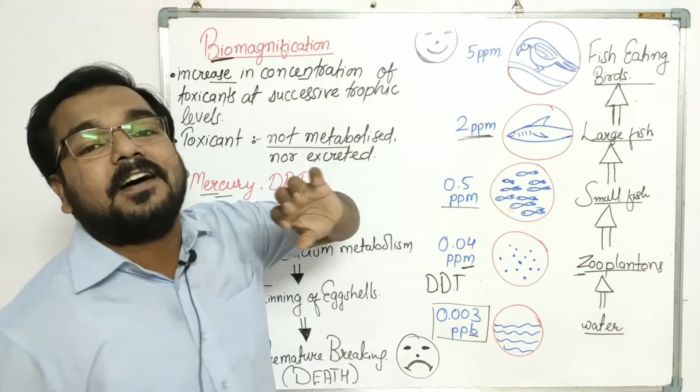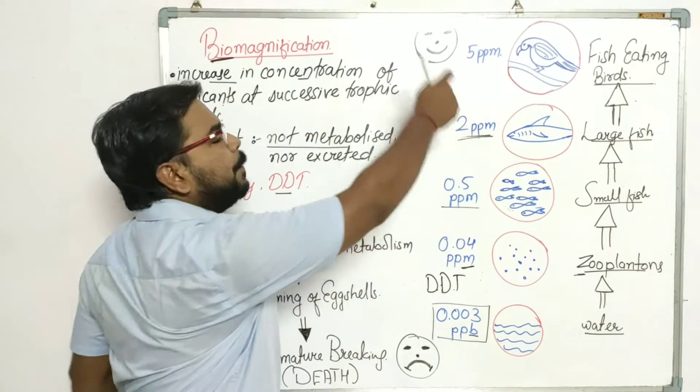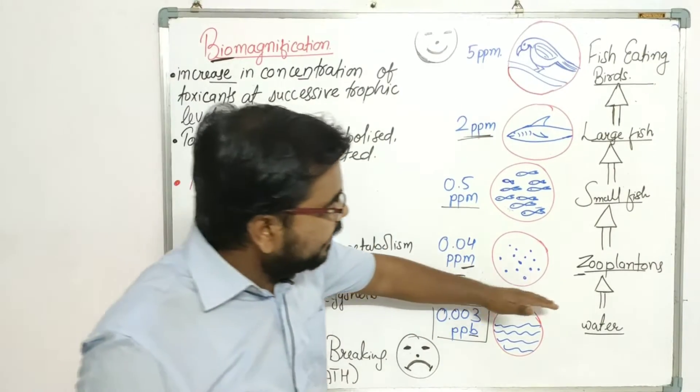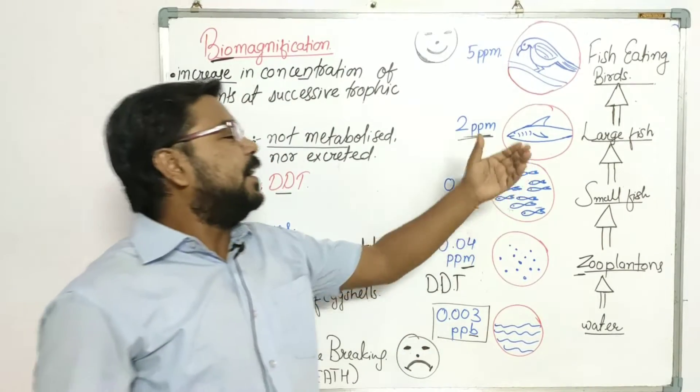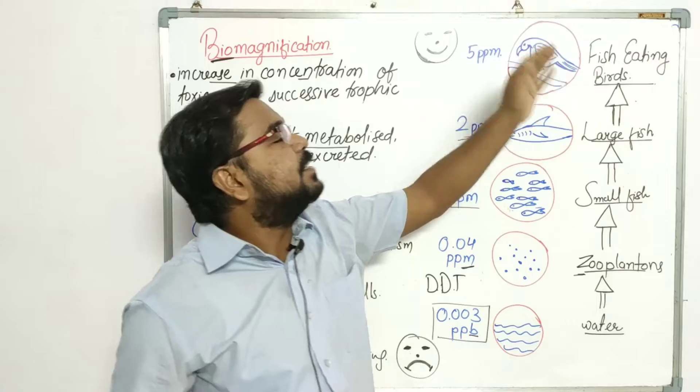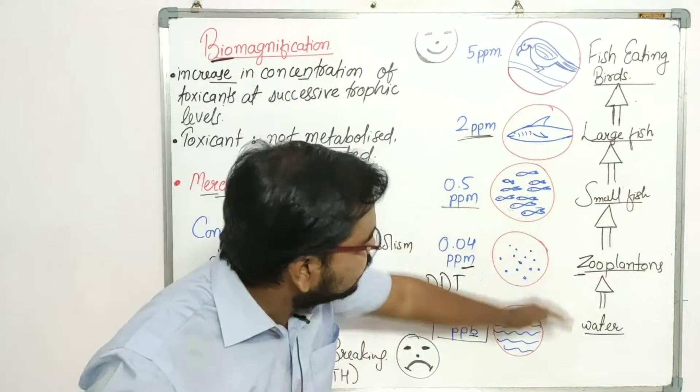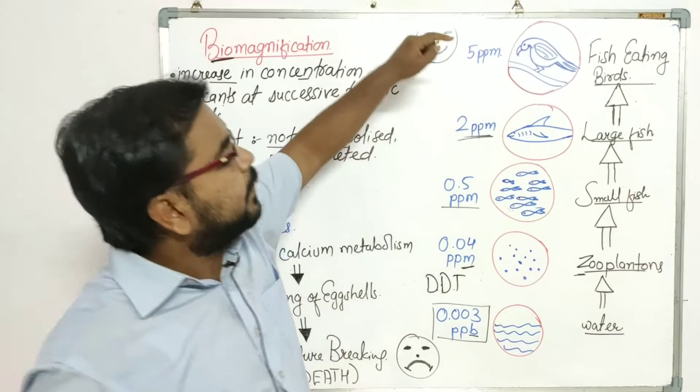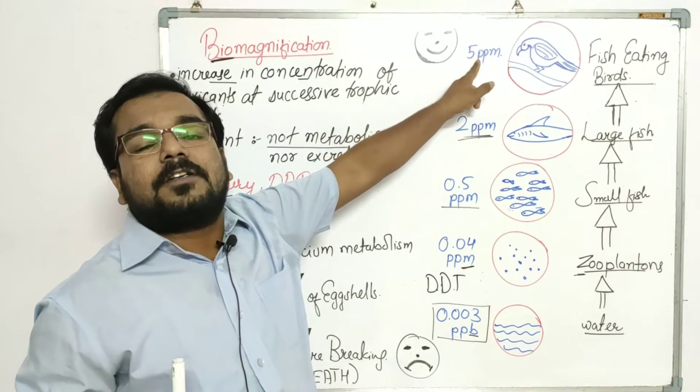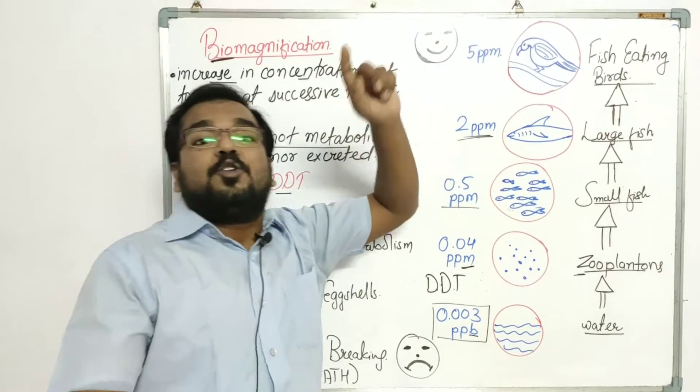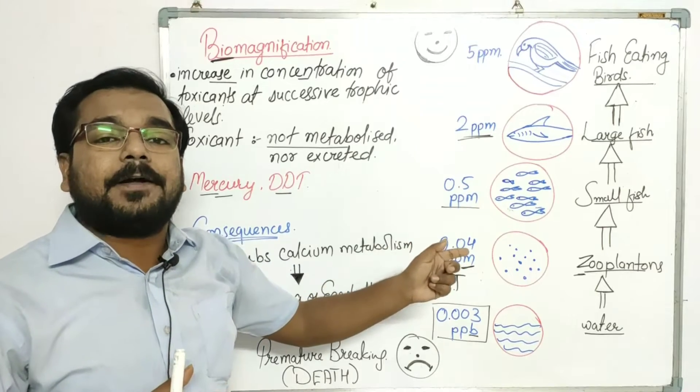And here the accumulation, the concentration of DDT will increase to 2 ppm. You can see every trophic level, there will be more concentration. And if you consume these fishes, if fish eating birds consume these fishes, then you can see it is at the top of the food chain. It is the top carnivore. Here the concentration of DDT has increased to 5 ppm.